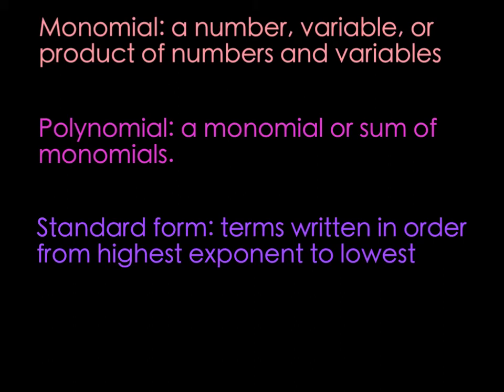A few basic definitions before we go on. A monomial is a number, a variable, or a product of numbers and variables. So that means I'm talking about 2x or 5x squared, because if I square something or cube something, I'm still multiplying, so that's still a product. What wouldn't apply would be things like square roots or dividing.